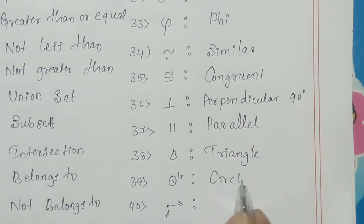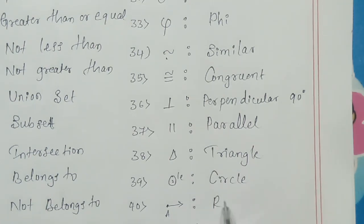Next, this is triangle. This is circle. This is ray. And this is line segment. So maximum students don't know which is line segment.